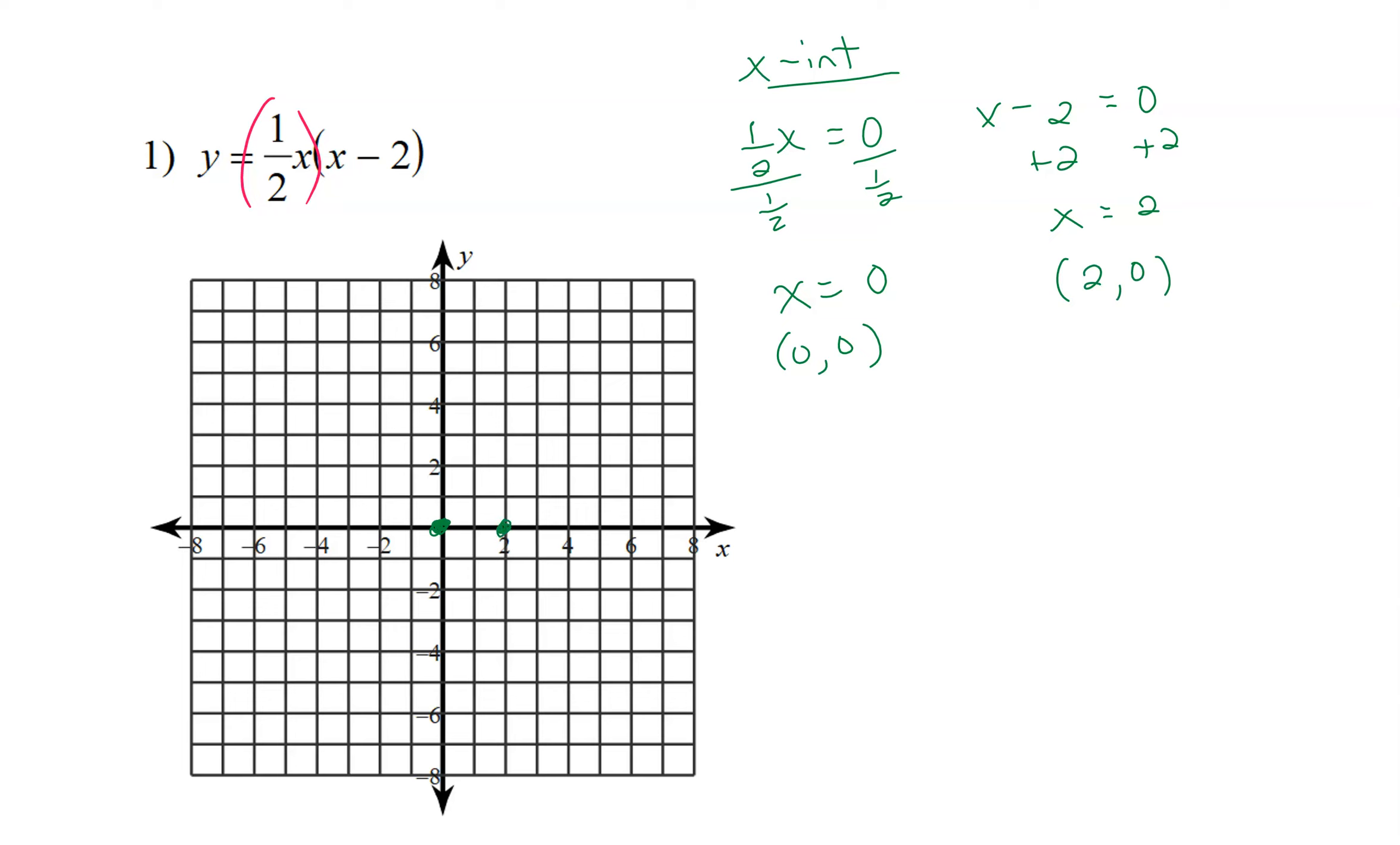Now once we've found the x-intercepts, we can use these two to find the axis of symmetry. The axis of symmetry for x-intercept form is found by just averaging the x-intercepts, and we average them by adding them together and dividing by 2.